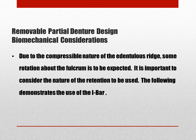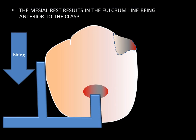Due to the compressible nature of the supporting tissue in the tooth tissue supported partial denture, some rotation about the fulcrum is inevitable. Selection of the clasp assembly is of primary importance. The RPI clasp, which stands for rest, proximal plate, and I-bar, is designed to disengage when biting force is applied. The point of rotation of the partial is through the mesial rest, which is anterior to the retentive clasp. As a result, when biting force is applied, the clasp disengages. The short guiding plane rotates into the cervical constriction of the distal aspect of the tooth. The vertical bar minor connector, which connects the mesial rest to the major connector, should not impinge.